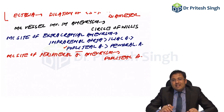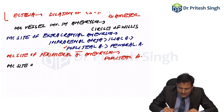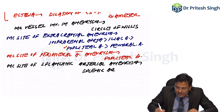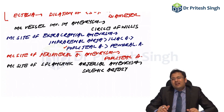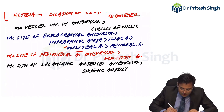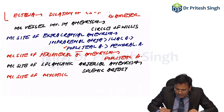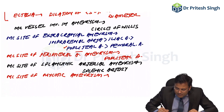The most common site of splanchnic arterial aneurysm is the splenic artery. The most common site of mycotic aneurysm — which is an infected aneurysm caused by bacterial infection — is the femoral artery, followed by the aorta.